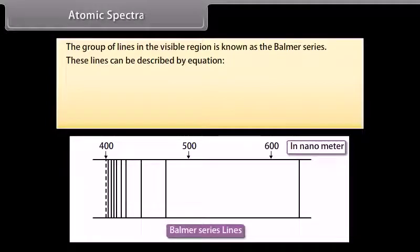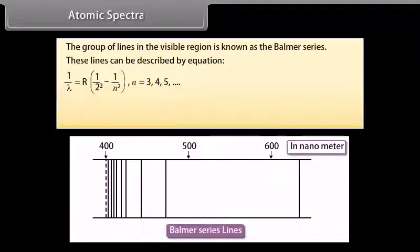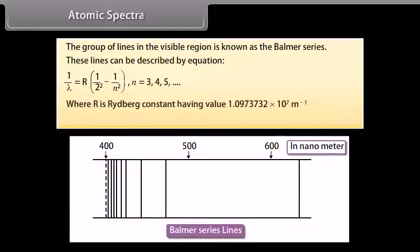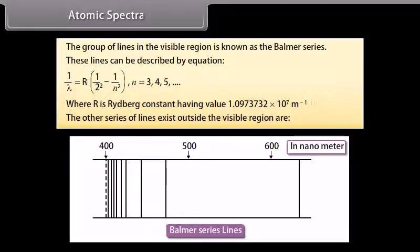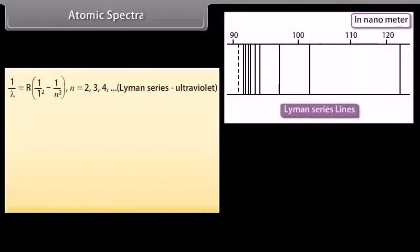The Balmer series lines can be described by: 1/λ = R(1/2² − 1/n²), where n may be 3, 4, 5, and so on. R is the Rydberg constant having value 1.0973732 × 10⁷ per meter. The Lyman series, which exists outside the visible region, is given by 1/λ = R(1/1² − 1/n²), where n may be 2, 3, 4, 5, and so on.